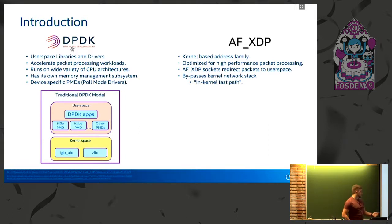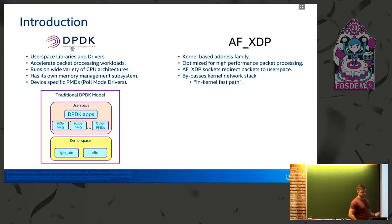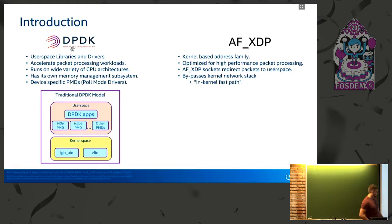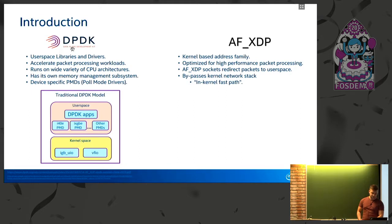If we take a closer look at a simplified diagram of the traditional DPDK model: in kernel space we have DPDK-specific kernel modules. They interact with the NICs and expose them to user space. In user space we have all of our DPDK PMDs and our applications, and they work together to do whatever wonderful things you want to do with your packets.